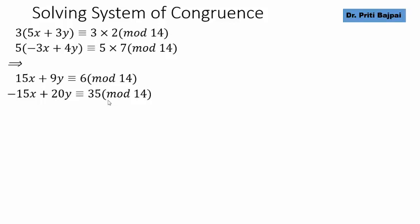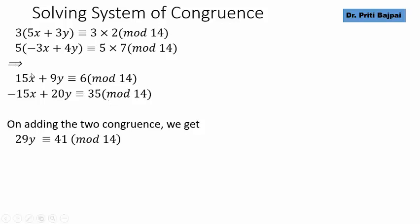We can always add left and right hand sides of a congruence if the moduli is same. Here we do the same thing, we will add the two congruence and we will get 29y is congruent to 41 mod 14.